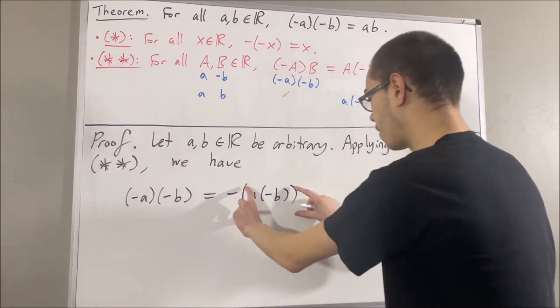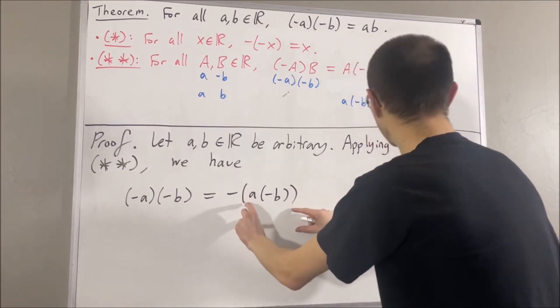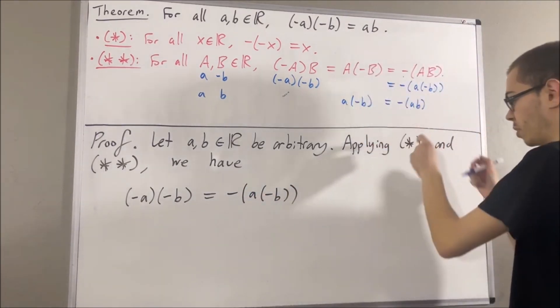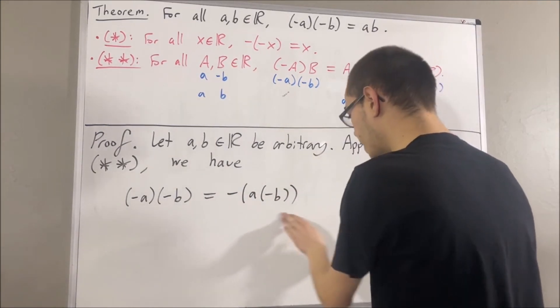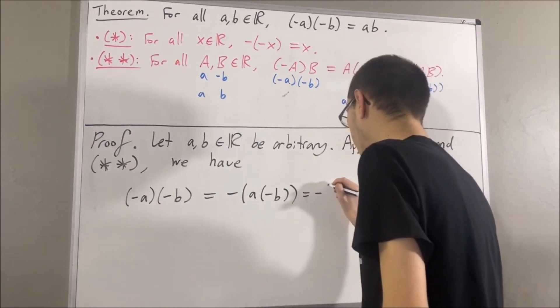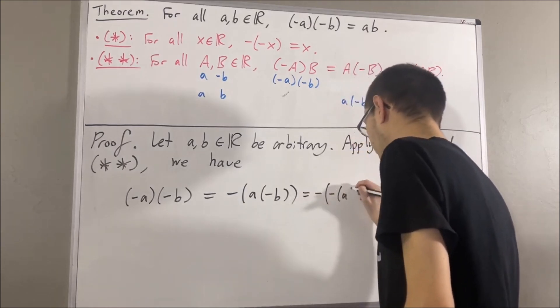So, the guy we have inside this parentheses is equal to the negative of AB. So, overall, this entire thing is equal to the negative of the negative of AB.